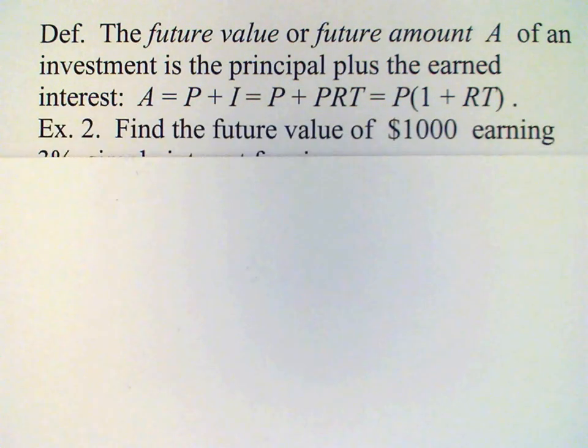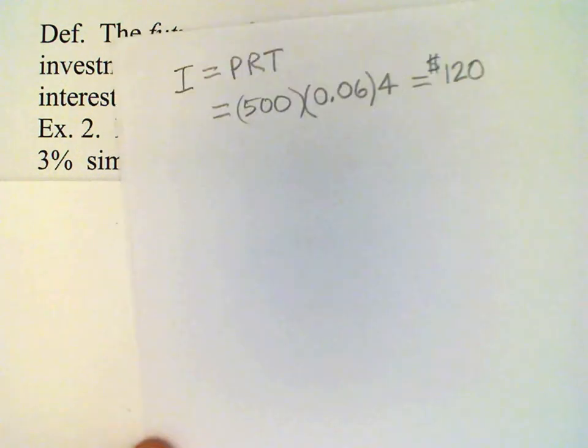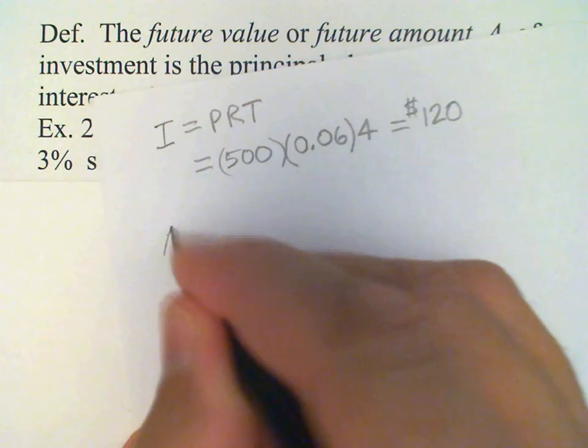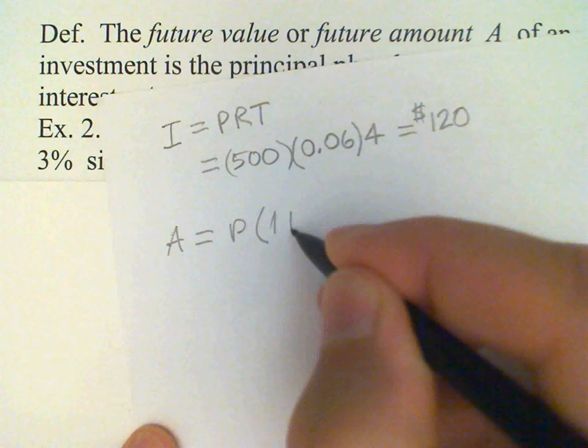For example, we would like to compute the future value of a $1,000 investment earning 3% simple interest for six years. So we'll use our formula for A. A is equal to P times (1 + RT).